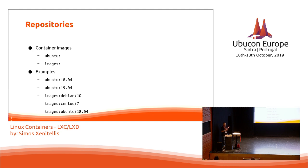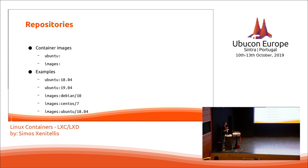When you use LXD, it's good to have a repository of container images — ready-made images you can download, instantiate, and run. There is one repository called Ubuntu, which has official Ubuntu images, and another called Images, which has all the rest including Ubuntu, CentOS, Debian, and so on. The image name format is repository-name colon version.